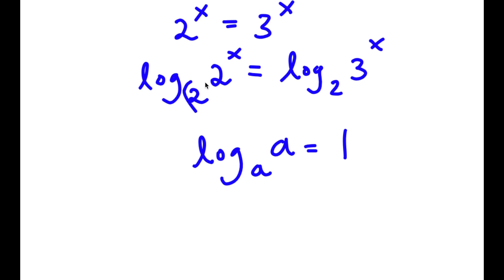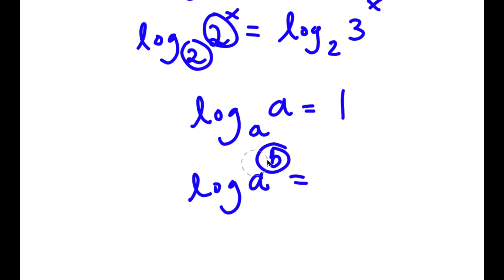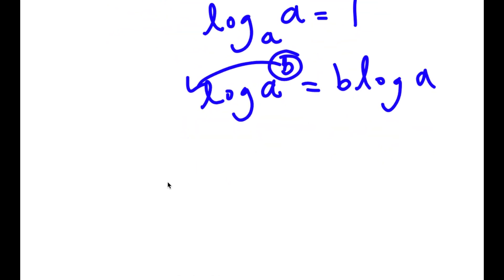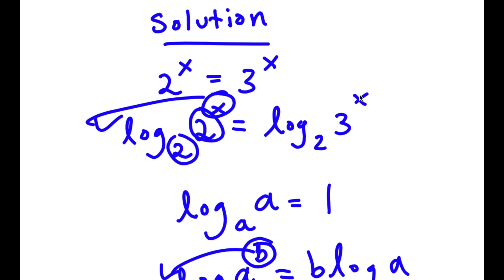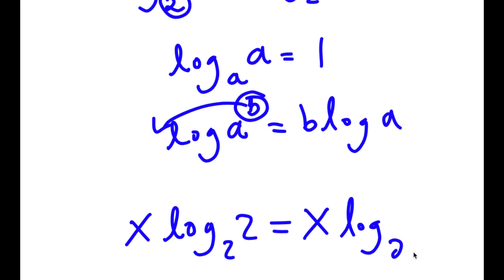As you see here, we have log base 2 of 2. But before I cancel those out, if I have something in the form log base a of b to the power of b, I can move this exponent to the front, so it equals b times log a. In this case, x is my exponent, so I can move it to the front. Now I have x times log base 2 of 2 is equal to x times log base 2 of 3.